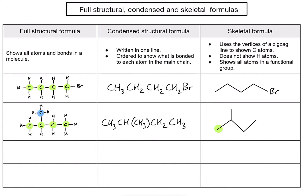Third example — this time starting with a condensed formula and drawing the full structural formula. I have three carbons in a row. The first carbon has two hydrogens, the second carbon has one hydrogen, and the third has two hydrogens and an OH group. Knowing each carbon must form four bonds, I can see that two carbons don't yet have four bonds, so there must be a double bond between those two carbons.